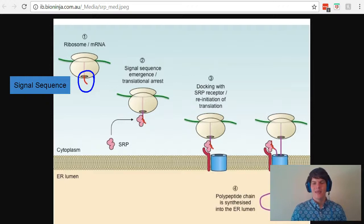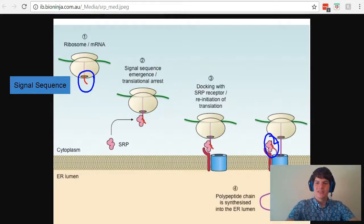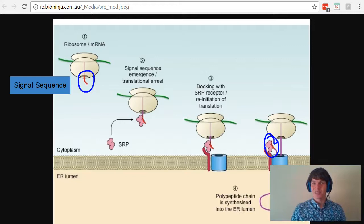One important thing to note is that after this protein is finished being translated into the ER lumen, this little signal sequence will get clipped off. It will not be part of the final protein product. For this reason, if you're ever asked a practice question about a fully functional protein having a signal sequence, you should know that it does not have a signal sequence because it is cut off right after it is finished being produced.